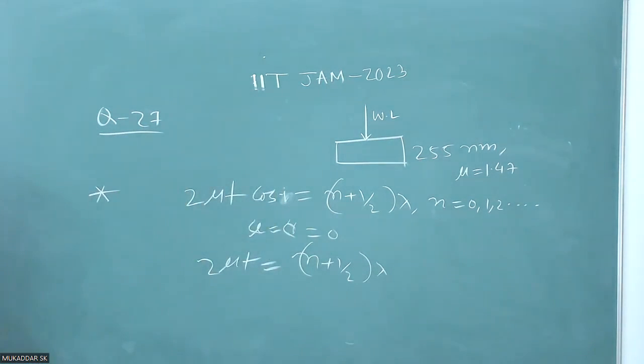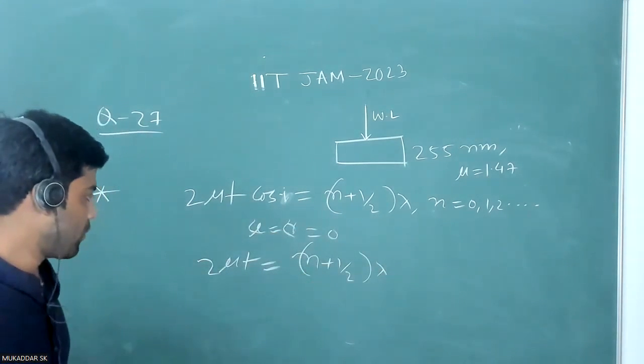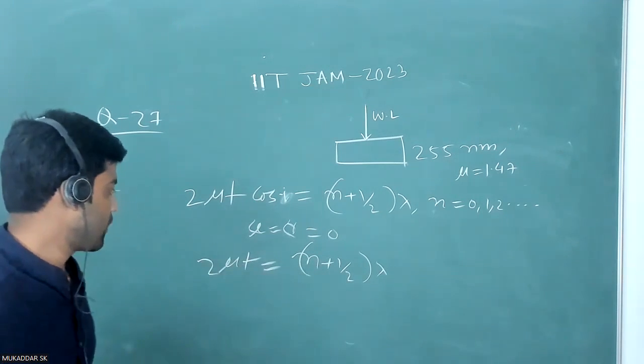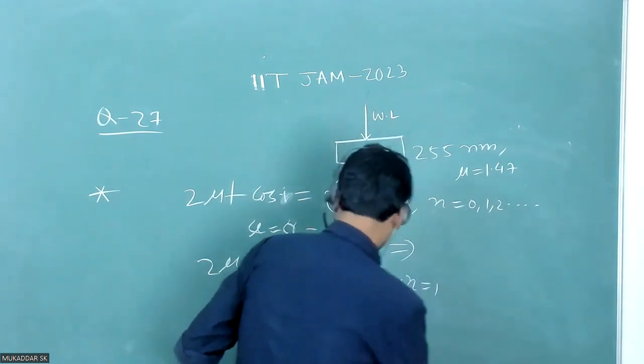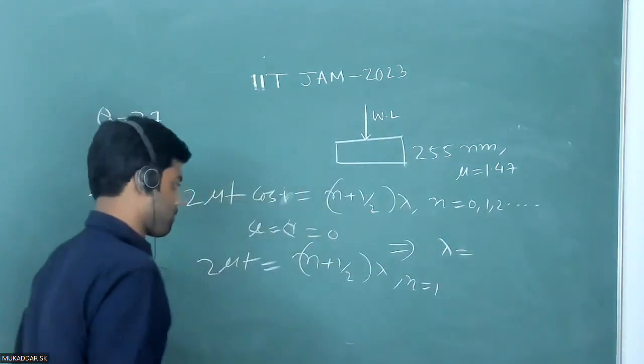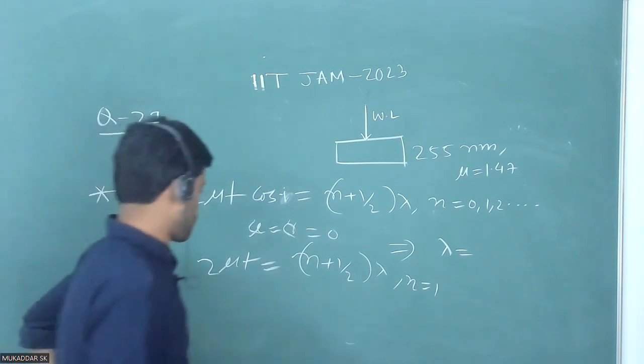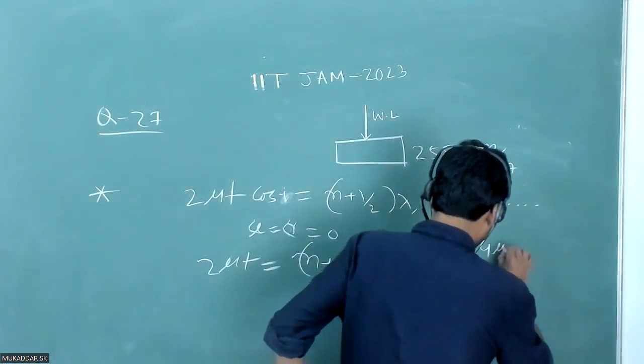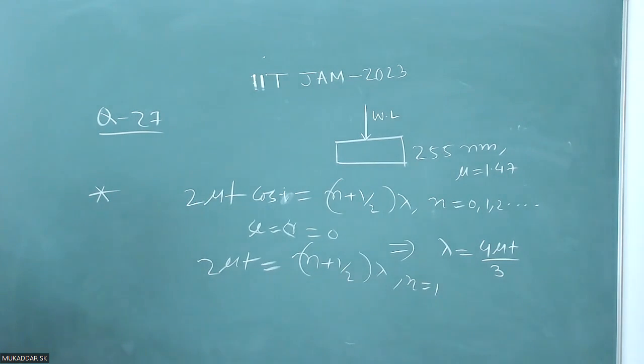The allowed values of n are 0, 1, 2, 3, and so on. If I take n = 1, this will be 3/2 λ. It means I will get lambda equal to 4μT divided by 3.